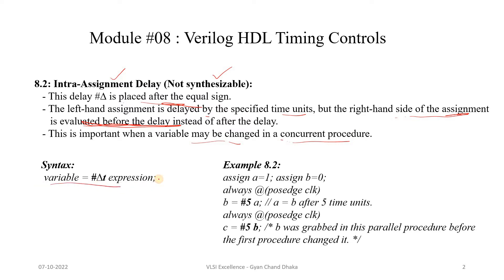Here is the syntax of intra-assignment delay: we have the left-hand side variable, then the delay time unit, then the right-hand side expression. For example: `assign a = 1`, `assign b = 0`, and then at the positive edge of the clock we have `b <= #5 a` — this is intra-assignment delay. That means: grab the input at the current instant, then after 5 time units assign it to b.